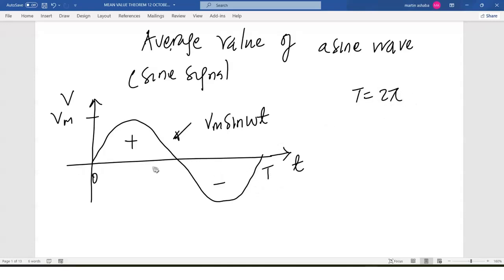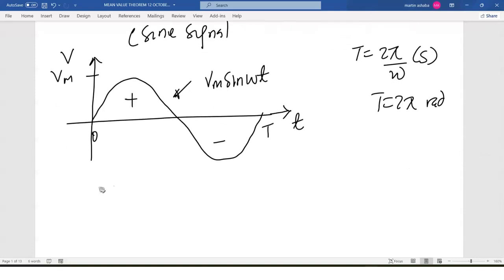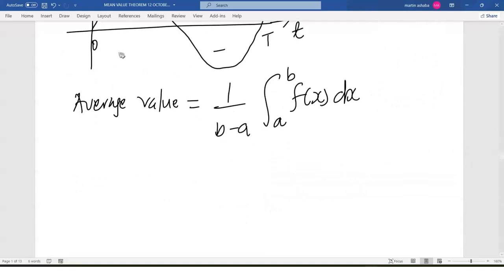If we are looking at the angle in terms of radians, then it would be 2π radians. Or you can have it as 2π divided by omega to have it in seconds. The average value we know is equal to 1 out of (b minus a), integrating from a to b of f(x) with respect to x.